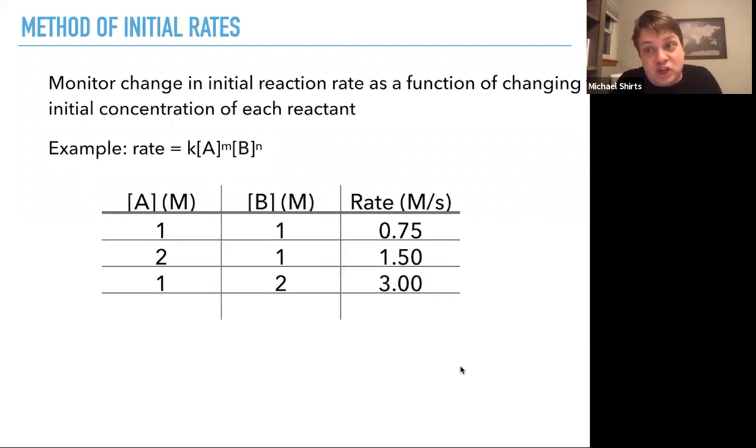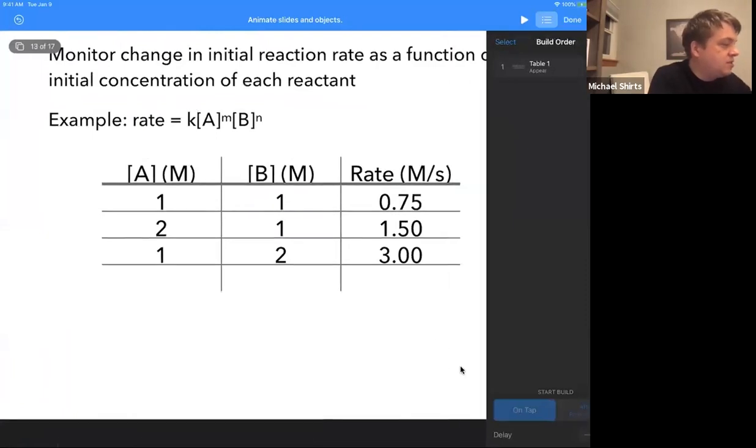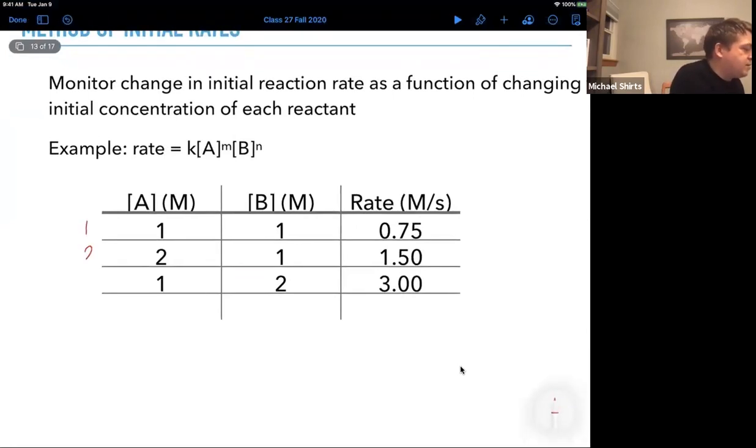Let's start with really easy numbers. So concentration of A in molarity is one. In experiment one, so we have a series of experiments we need to do. So this is experiment one, experiment two, this is experiment three. And we start the experiment, we measure the initial rate, which can be measured by looking at the change in concentration of A over time, the rate of disappearance of A.